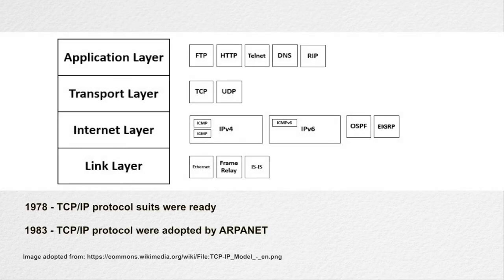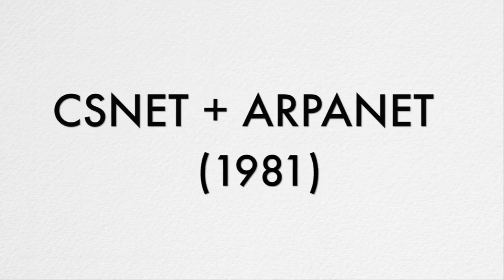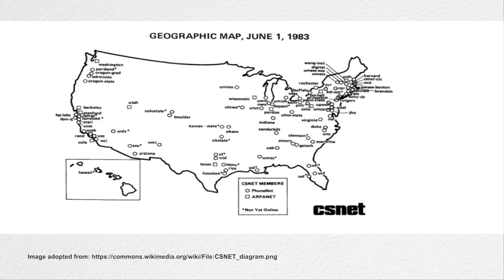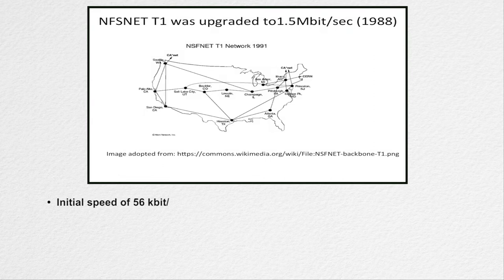Now there were many parallel systems working on different protocols and scientists were looking for common standards so that networks could be interconnected. In 1978, TCP/IP protocols were ready, and by 1983, the TCP/IP protocols were adopted by ARPANET. In 1981, the integration of two large networks took place. NSF developed the Computer Science Network known as CSNET, which was connected to ARPANET using the TCP/IP protocol suite. NFS supported a speed of 56 kilobytes per second.